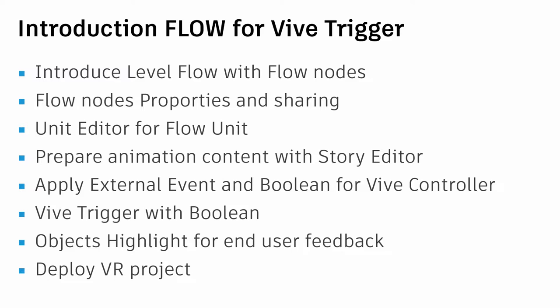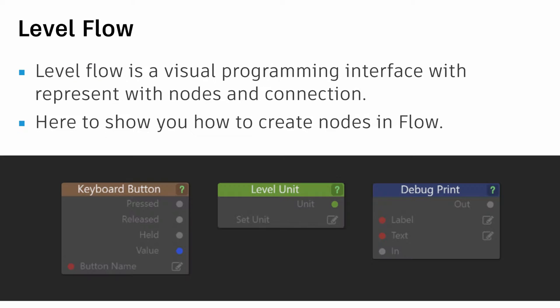We will show you how to share nodes with your colleagues. Besides Level Flow, there is a Unit Editor for objects, so some flow will be dedicated and applied to specific objects. We will prepare an animation with the Story Editor, apply an external event trigger with boolean for the Vive controller, and use a highlight node for user feedback when they touch objects. We'll also show how to deploy the VR project.